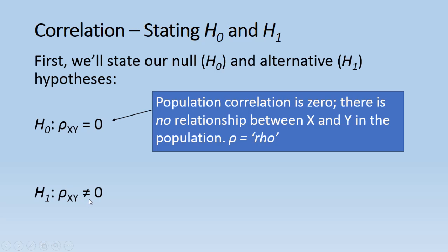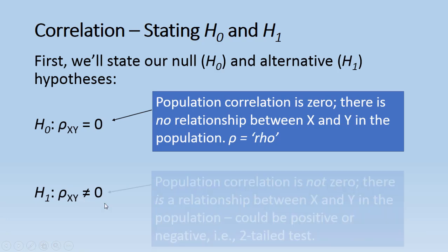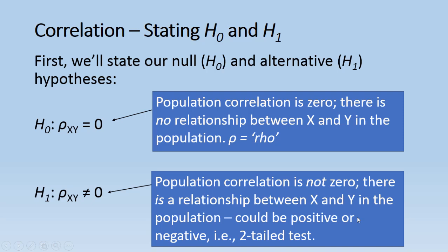And the alternative hypothesis is really just the opposite of that. Notice everything's the same except equals for null, not equals for alternative. So the alternative hypothesis is that the population correlation between X and Y is not equal to 0. And this is saying that there is a relationship between X and Y in the population. It could be positive or negative, or in other words, we're conducting a two-tailed test here.